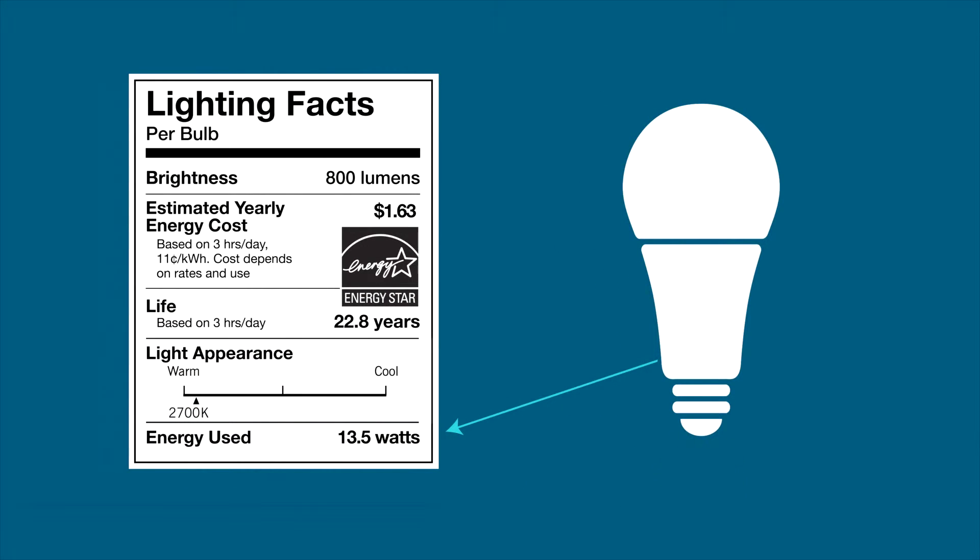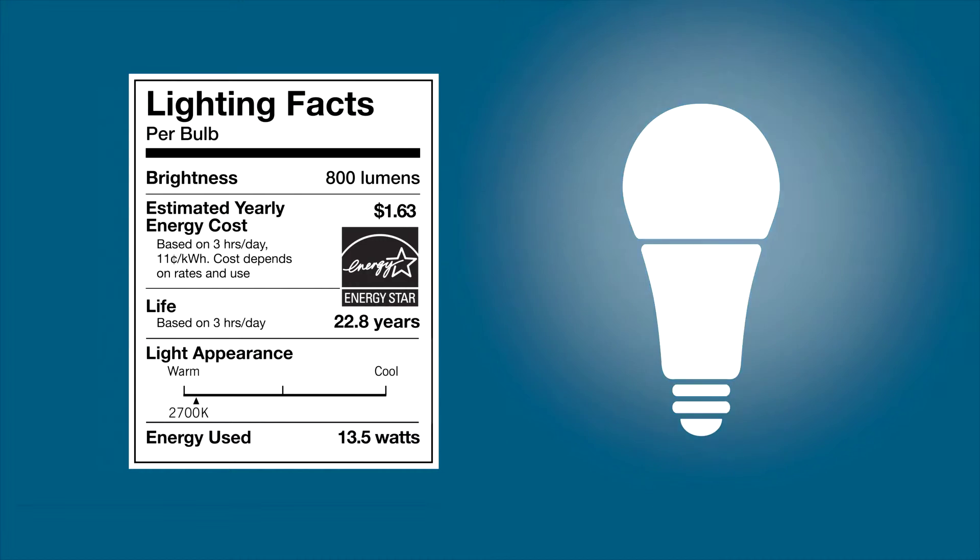Watts used to be the number you looked for when buying lights. Today it's lumens that really matter. Lumens measure a bulb's brightness. The higher the number, the brighter the light.